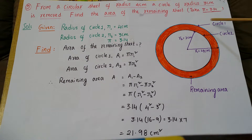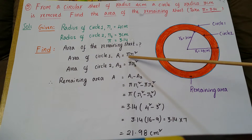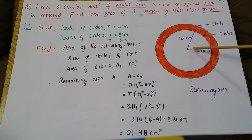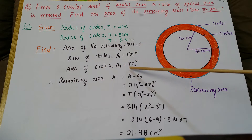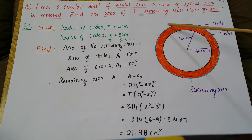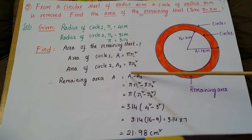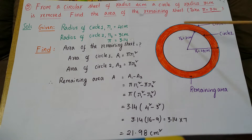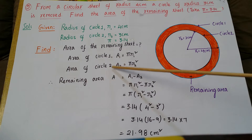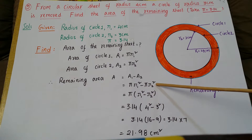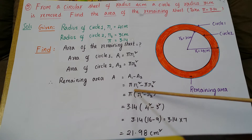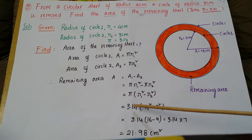Area of the remaining sheet means we subtract Circle 2's area from Circle 1's area. Area of Circle 1: A1 = pi × r1². Area of Circle 2: A2 = pi × r2². Remaining area A = A1 − A2 = pi × r1² − pi × r2². Taking pi as common: A = pi × (r1² − r2²).